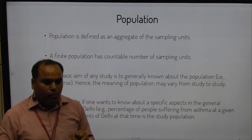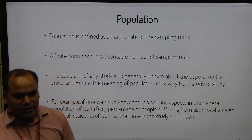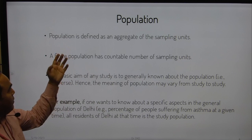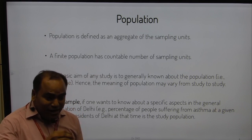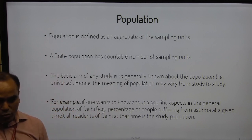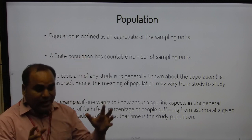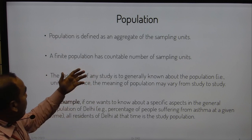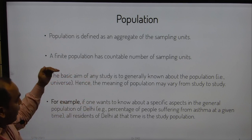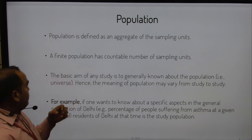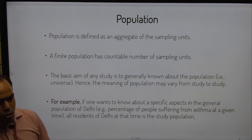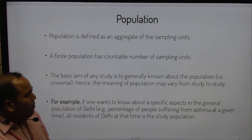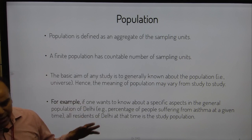Now, as students, we first need to understand how to define population, for example if an examination question asks you to define population. Population is defined as an aggregate of sampling units — a list of all sampling units, meaning each individual subject involved in a particular area or community, defined according to our objective. A finite population has a countable number of sampling units. The basic aim of any study is to generalize about the overall population or a subset of it, and the meaning of population may vary from study to study.